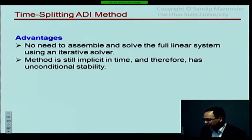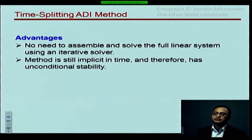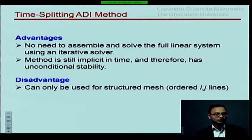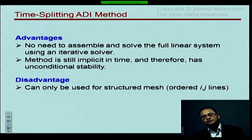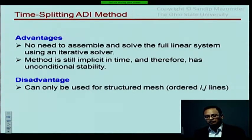Advantages of the time-splitting ADI method: no need to assemble and solve a full linear system with an iterative solver; the method is still implicit in time, giving unconditional stability and allowing large time steps. The main disadvantage is that it can only be used for structured meshes with ordered IJK lines. Attempts to apply it to unstructured meshes have found that the overhead of tracking cell sweeps exceeds the cost of simply solving the elliptic problem at every time step.